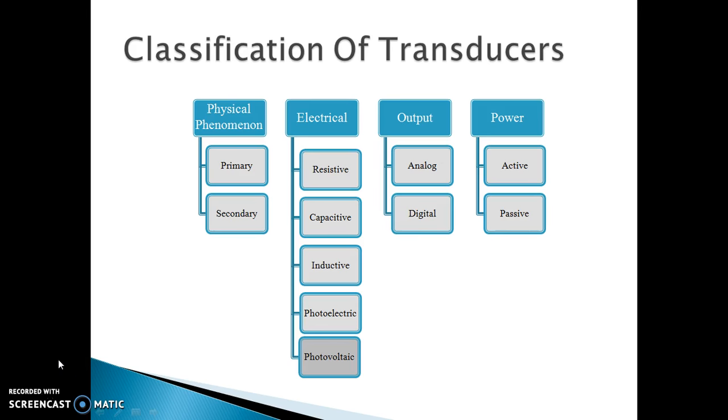Let's look at the classification of transducers. The transducers can be classified on different parameters such as physical phenomenon, electrical, that is the kind of electrical outputs which it can produce depending upon the output. That is if the output is analog, it becomes an analog transducer. If the output is digital, then it becomes the digital transducer. Then the power which is supplied to the transducers. Let's look into this in detail.